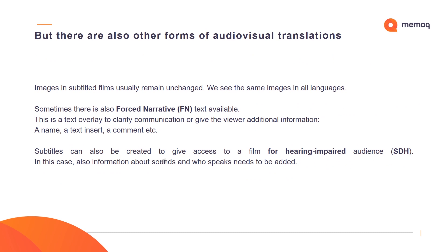There are also other forms of audiovisual translation. Images in subtitled films usually remain unchanged — we see the same images in all languages. Sometimes there is also forced narrative text available: a text overlay to clarify communication or give the viewer additional information. Subtitles can also be created to give access to a film for a hearing-impaired audience; in this case, information about sounds and the person who speaks also needs to be added.